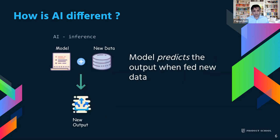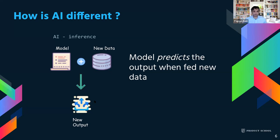What you can then do is take this model — similar to programming, the model is the code — and provide it some new data in production, and it produces predictions or new outputs. So that is a very simple concept: you create the model, give it more data, and produce an output. We'll go through an example and it will make more sense.